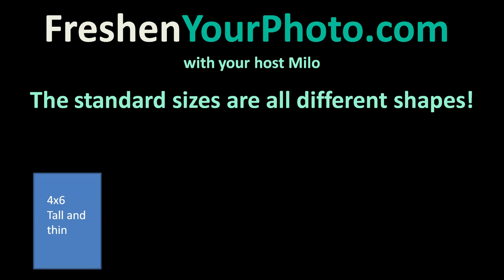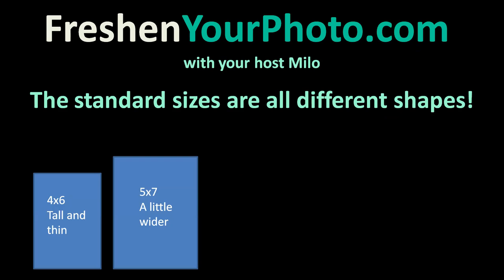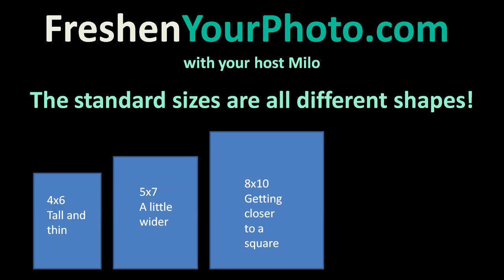Let's look at it. 4x6 is tall and thin. 5x7 is looking a little wider. 8x10 is getting closer to a square. And the math holds out for that — if you go to a 4x6 and double those numbers, double 4 and you get 8, but double 6, you don't get 10, you get 12. So they're different sizes and shapes.